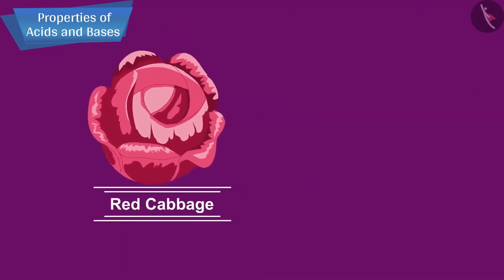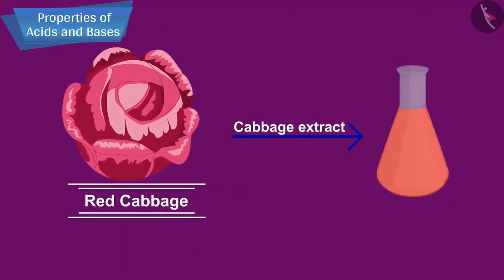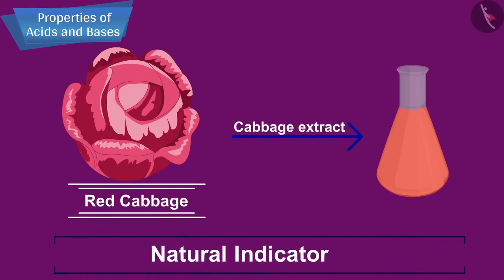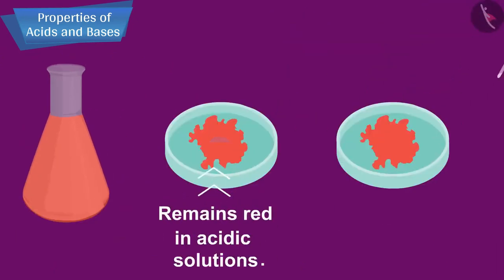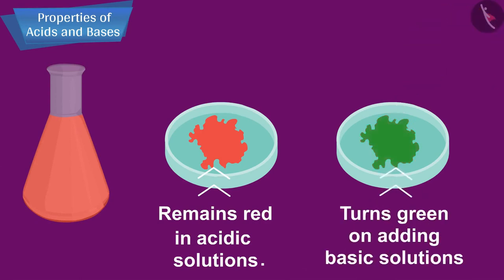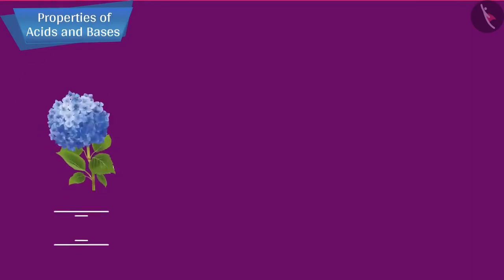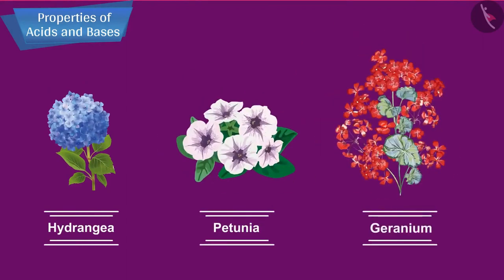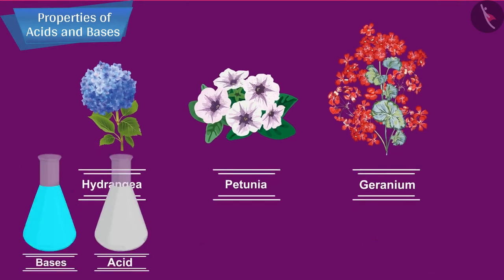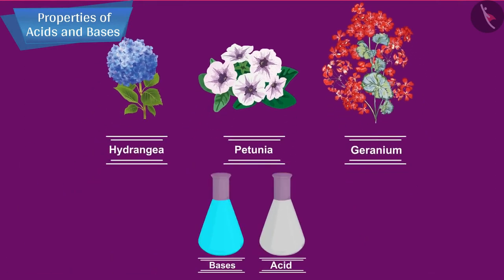Red cabbage extract, obtained from red cabbage leaves, is also a natural indicator and is red in colour. It remains red in acidic solutions and turns green on adding basic solutions. The coloured petals of some flowers like hydrangea, petunia, and geranium also change colour in the presence of acids and bases and act as indicators.